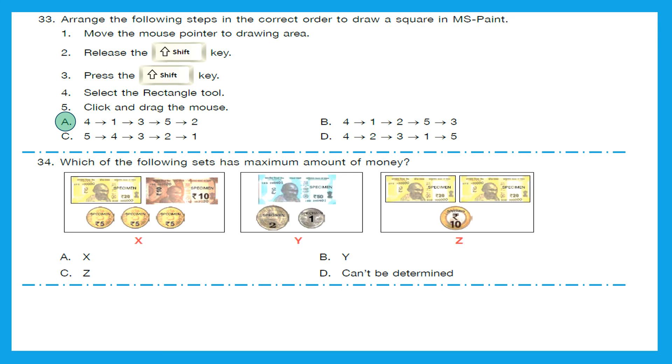Question 34: Which of the following sets has maximum amount of money? So, first of all we have to see how much money is in X, Y and Z. And then we will find which is the greatest number. So, in X box we have 20 plus 10 that is 30, 30 plus 5, 35, 35 plus 5 is 40 and 40 plus 5 is 45. We have 45 rupees. Y has 50 plus 2 plus 1 equal to 53 rupees. Z has 20 plus 20, 40 plus 10, 50 rupees. So, out of 45, 53 and 50, which one is greatest? It is 53. That means option B, Y is the right answer because it has maximum amount of money.